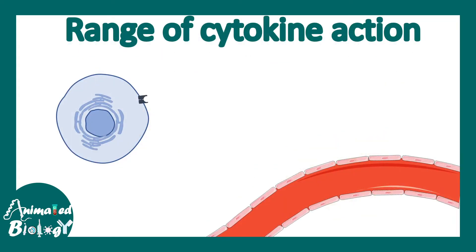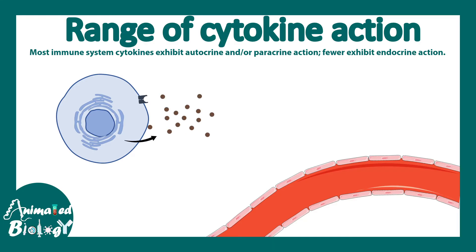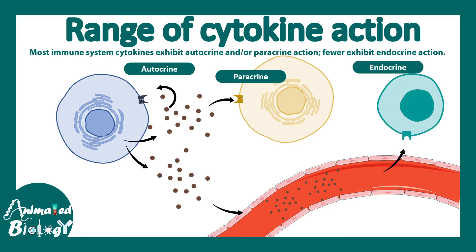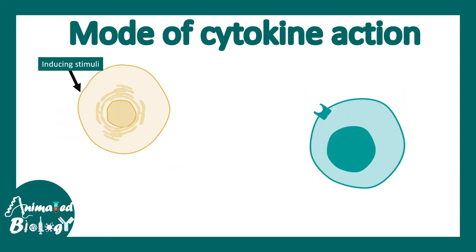Let's talk about the range of cytokine action. In most common cases, the cell secreting the cytokine influences a nearby cell — that is known as paracrine signaling. The secreting cell can also respond to its own cytokine, which is known as autocrine signaling. In rare occasions, cytokines can be secreted into the bloodstream to affect a distant cell. Autocrine and paracrine modes are most common in the immune system.